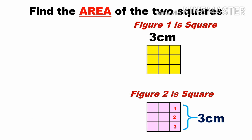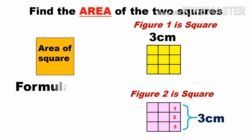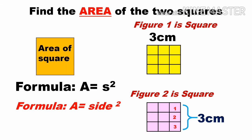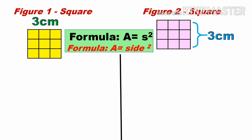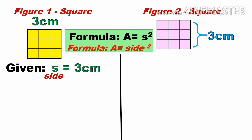To find the area of the two squares, we use the formula A equals side squared. For the first figure (yellow) and the second figure (pink), the given side length is three centimeters.